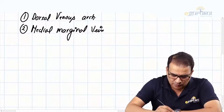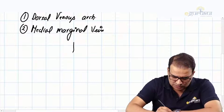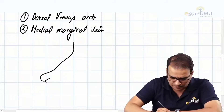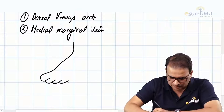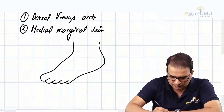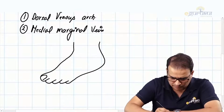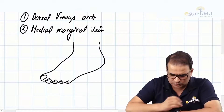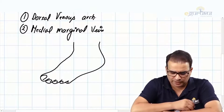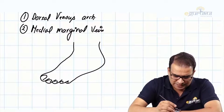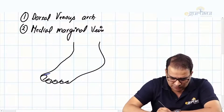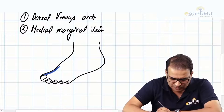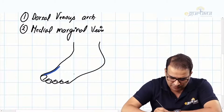Imagine here is the dorsum of the foot. There's a vein running along the medial margin of the great toe - this is called the medial marginal vein. As the name suggests, medial marginal vein. And here we have an arch on the dorsum called the dorsal venous arch. The name tells everything.